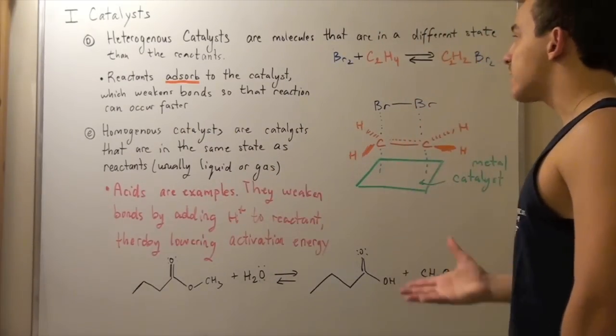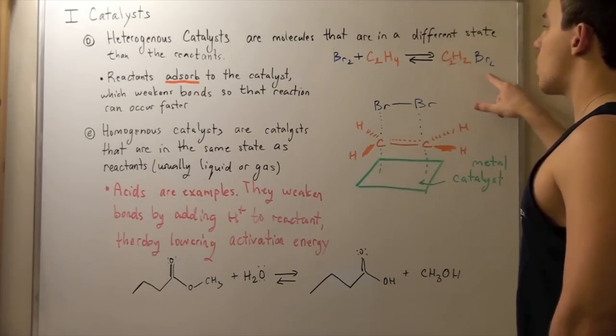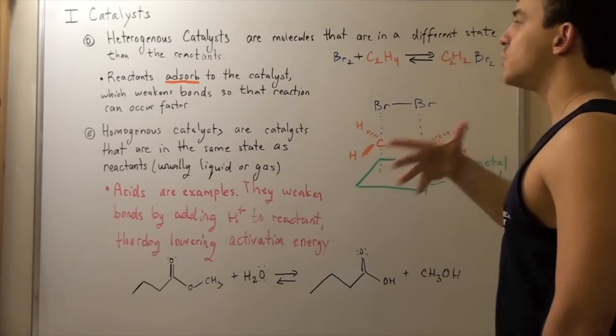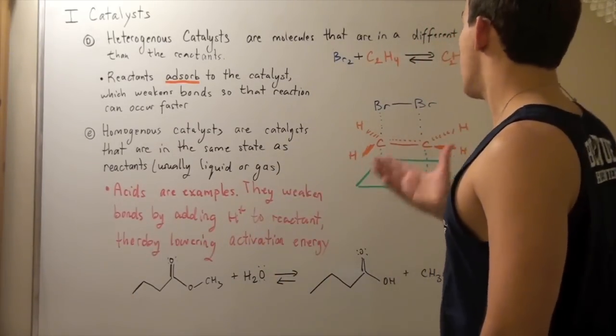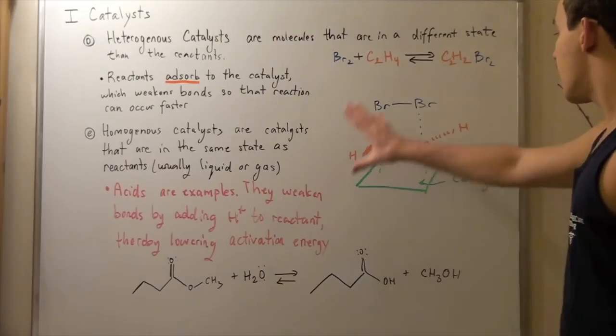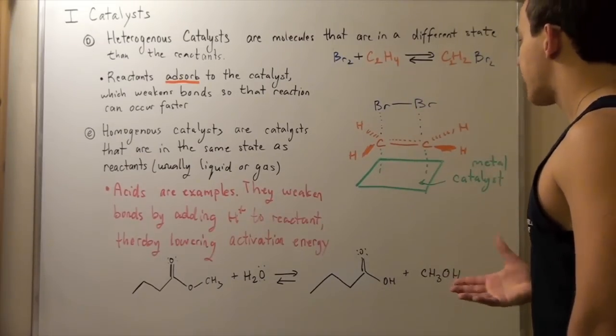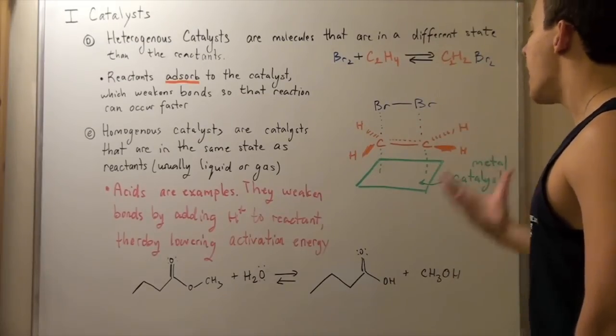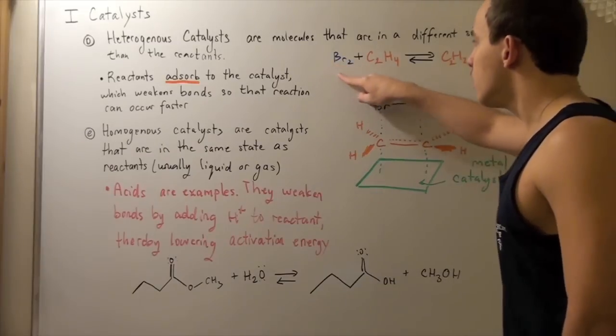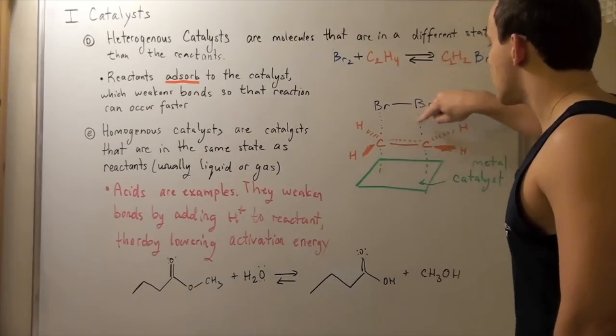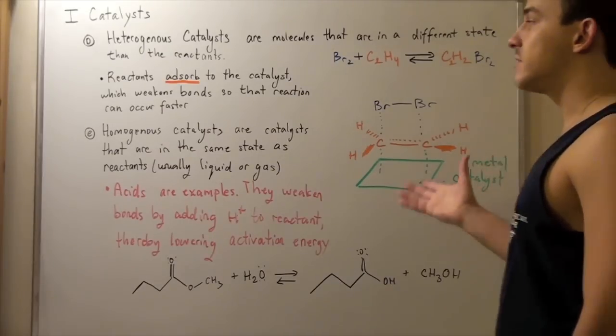Let's look at the following uncatalyzed reaction. Br2 reacts with C2H4 to produce C2H2Br2. This by itself is a very slow occurring reaction. But if you have a catalyst, a metal catalyst, this reaction will speed up. This is our metal catalyst. This reactant momentarily binds to the surface of our catalyst, which weakens the double bond. Then this other reactant can come from the top, attacking these carbons, thereby creating our product.